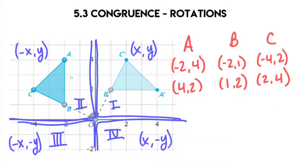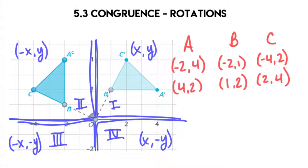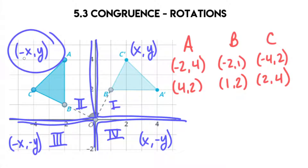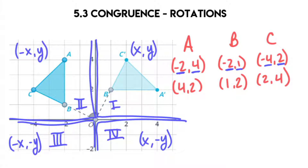So what we're really doing here is when we think of rotating something 90 degrees, we're thinking of where is that point going to land. All three of our points A, B, and C all started in quadrant 2. When they rotated 90 degrees, they go one quadrant over — so they went from 2 to 1, which means they went from having a negative X and positive Y to a positive X and positive Y. You have to keep in mind where the negatives are going to be based on quadrants 1, 2, 3, and 4.